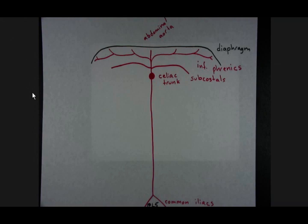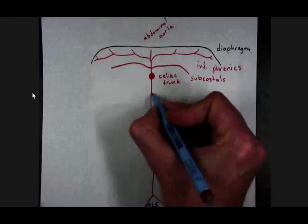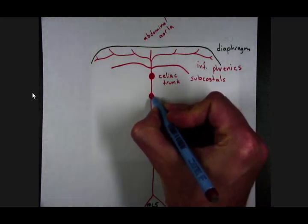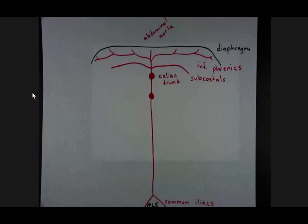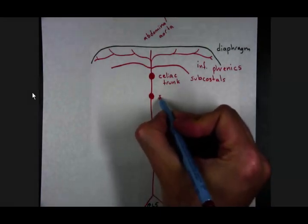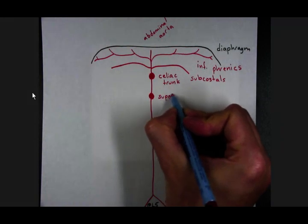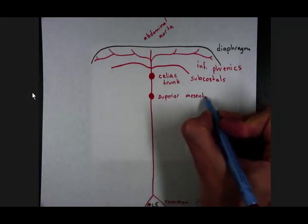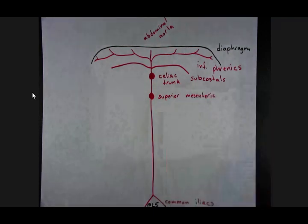Inferior to the celiac trunk is the superior mesenteric artery. Similar idea. Large vessel coming off the anterior aspect. Superior mesenteric.